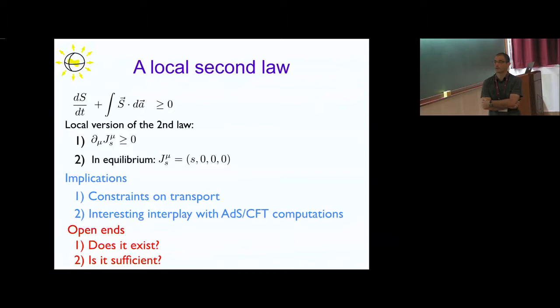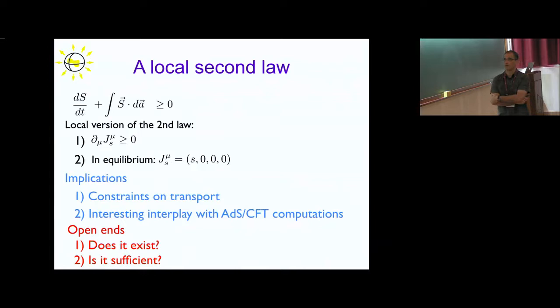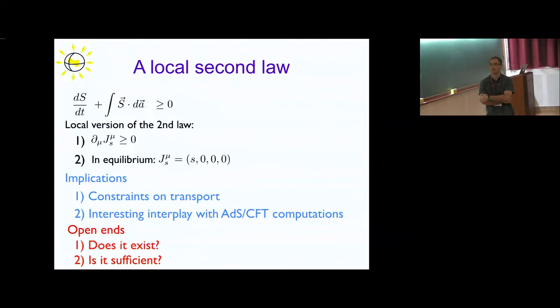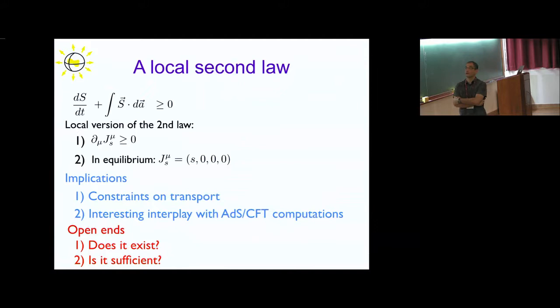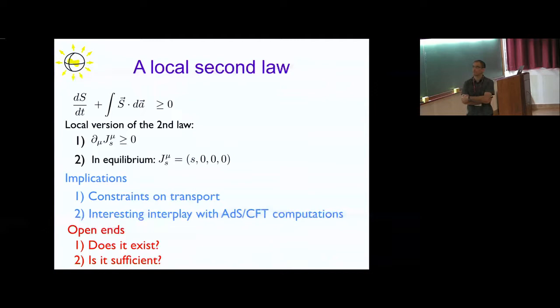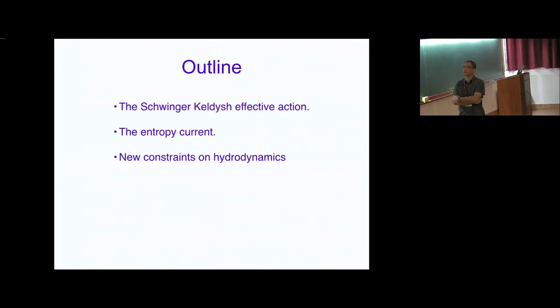Another question is whether the second law is sufficient to completely determine transport. In hydrodynamics, we look at the stress tensor, write down its dependence on velocity and temperature — the most general thing compatible with the symmetries — then impose the second law and see what structure is left. The question is whether this is a sufficient condition to determine all transport coefficients, or whether there are other constraints beyond those given by the entropy current. What I want to show is that using the Schwinger-Keldish effective action, there are actually more constraints not captured by the second law.